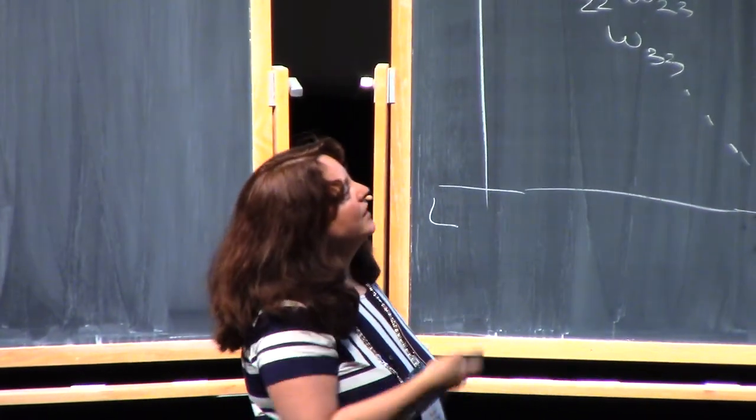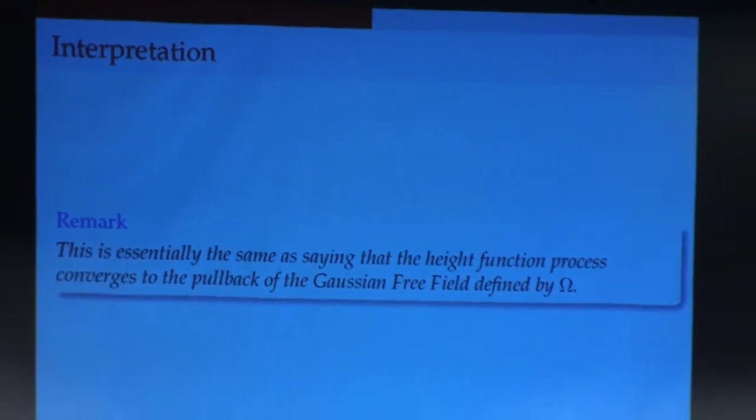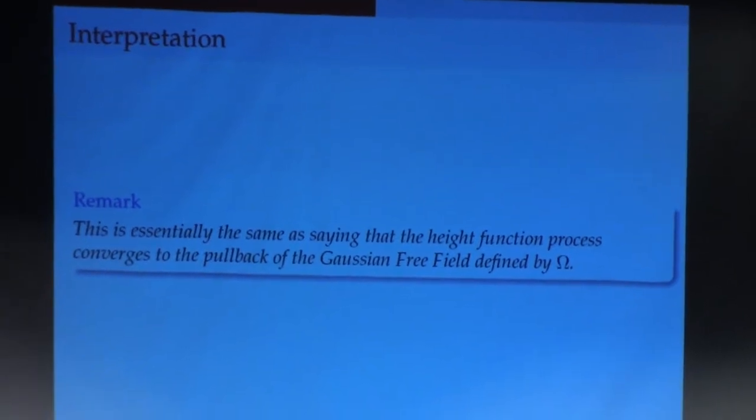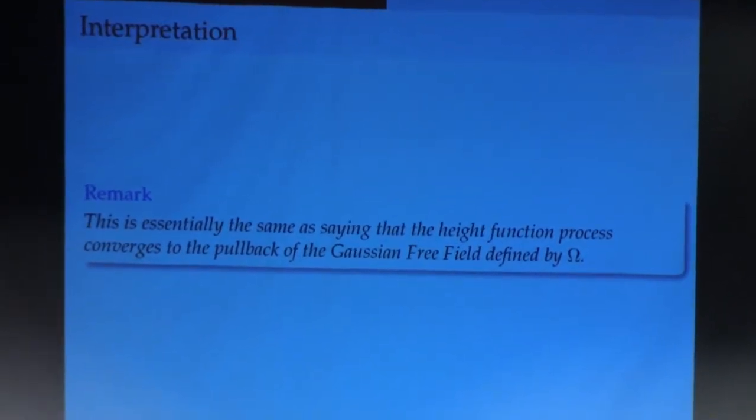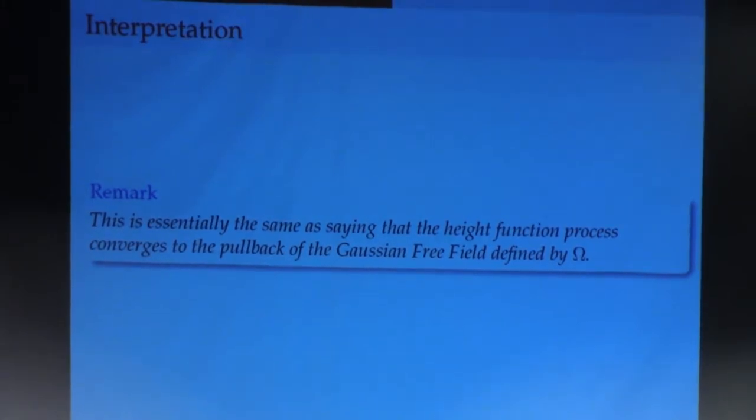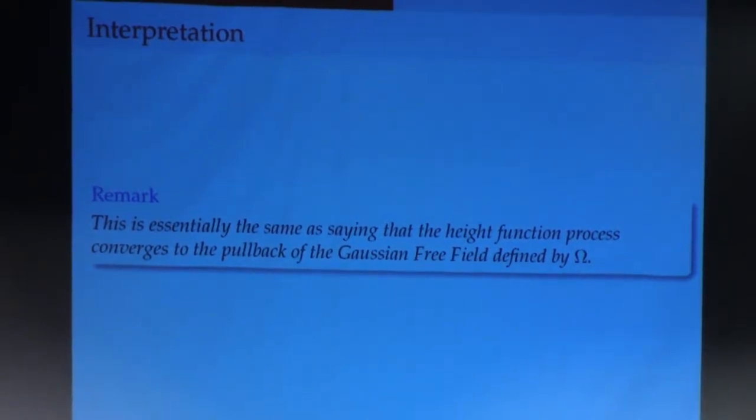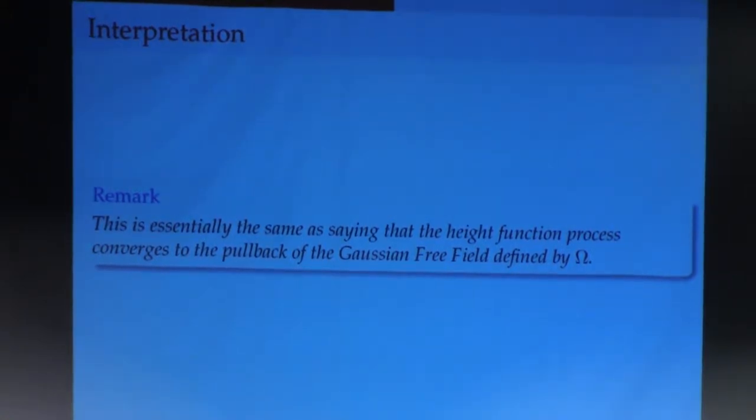All right. So this is what the covariance structure is going to be. Now, this, and I'm going to say this, and then I'll define the quantities and then I'll come back to it. This is essentially the same as saying that the height function process, defined by the height function that I mentioned, converges to the pullback of the Gaussian free field that corresponds to the map omega that I mentioned before. And now, of course, this to you might sound like a bunch of nonsense, which is why I'm going to define the quantities involved.